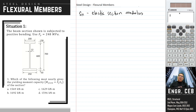Usually for steel members available in the database, the elastic section modulus is given. But for this particular problem, we have a different section, so we cannot find this section in the database. Therefore, we have to solve first for the elastic section modulus.